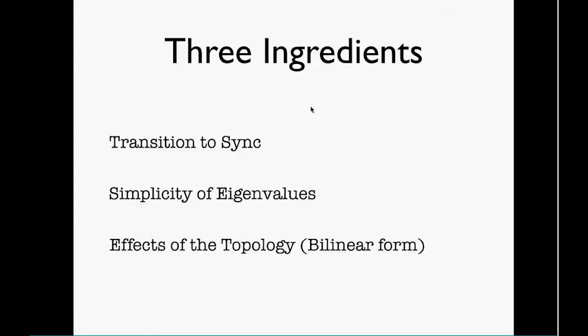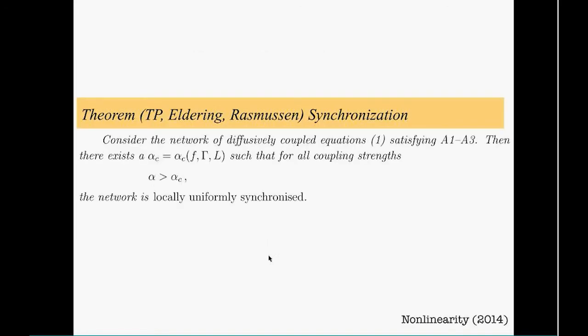Let me tell you how we can prove this idea. Those results actually we only need three ingredients which are fairly well known. The first one is transition to synchronization, basically doing some master stability function analysis. The second one is controlling derivatives of eigenvalues—I need these eigenvalues to be simple. This is a non-trivial step I'll discuss. Finally, after some computations, we're able to boil down the whole analysis to analysis of a bilinear form.